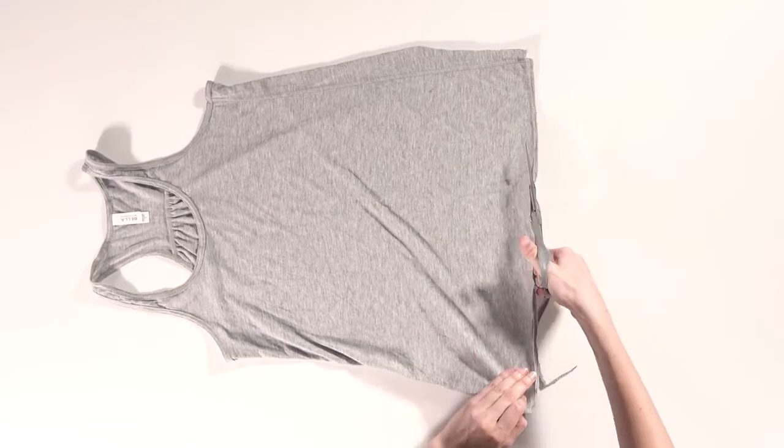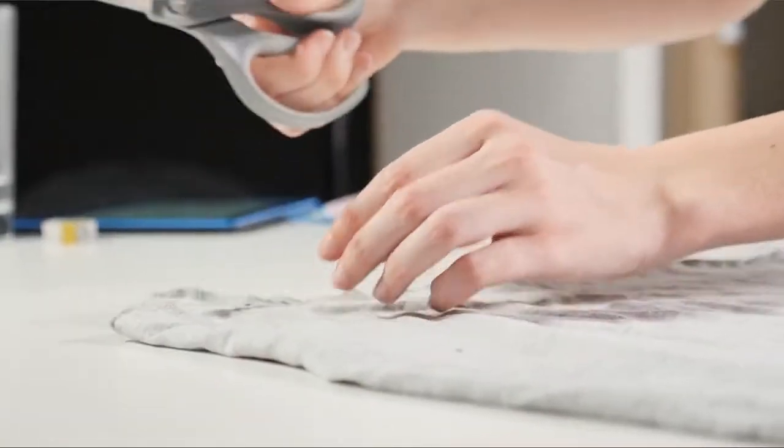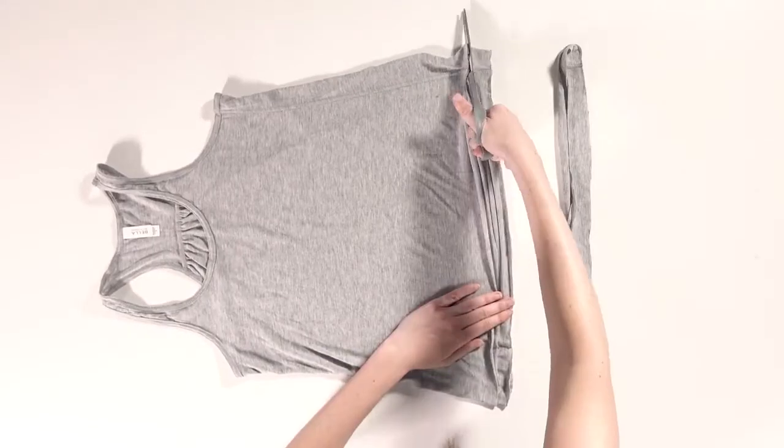The first thing you're going to do is take your shirt and cut off the bottom hem. Next, you'll cut six strips from the bottom of the shirt about an inch wide.